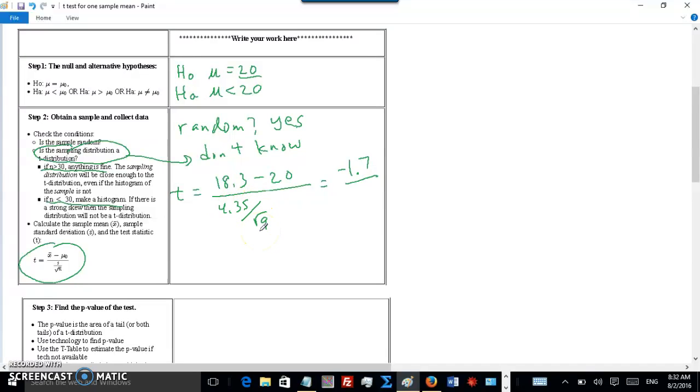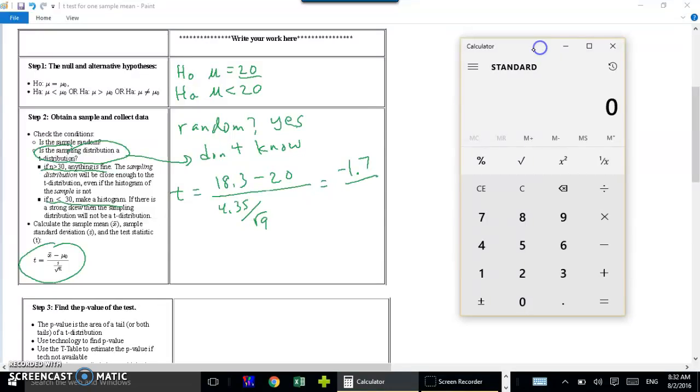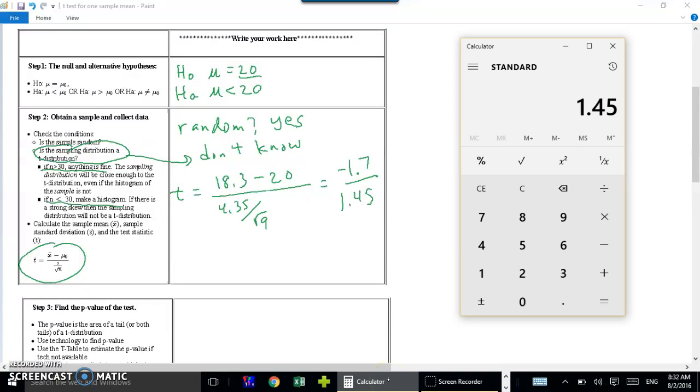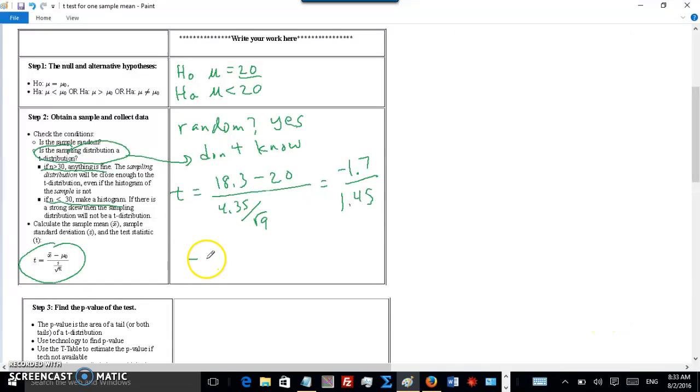4.35 divided by square root of 9. Let's get our calculator out. Square root of 9 is just 3. So 4.35 divided by 3 equals 1.45. Okay, so now let's calculate. Let's clear that here. 1.7 divided by 1.45 is 1.172. Round it off, 1.172. That's enough digits for this. Excuse me, negative 1.172.